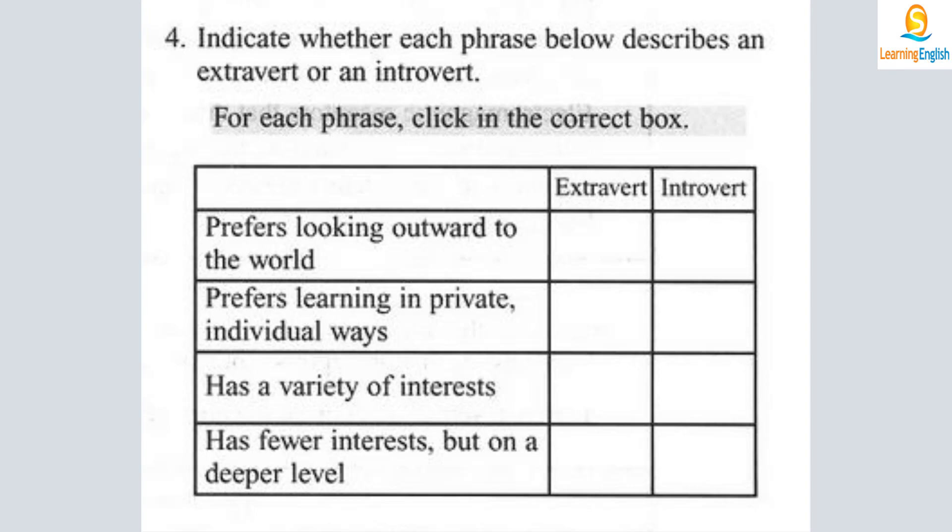One well-known pair of type preferences is extroversion-introversion. Some people are extroverts and some are introverts. Extroverted people are by nature continuously aware of events outside of themselves. Extroverts turn outward to the world around them to pick up ideas, values, and interests, and usually have a variety of interests and take an active approach to life. Introversion is just the opposite — introverts look inward for resources, pursue fewer interests but on a much deeper level, and take a reflective approach to life.